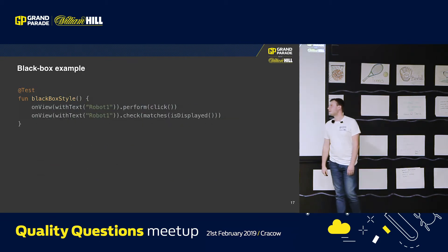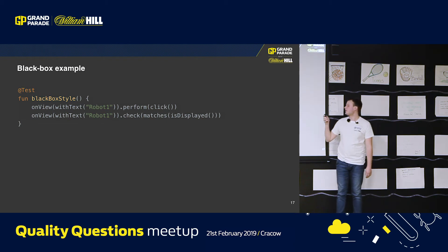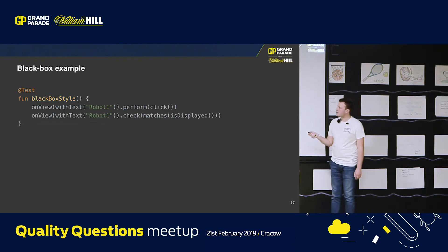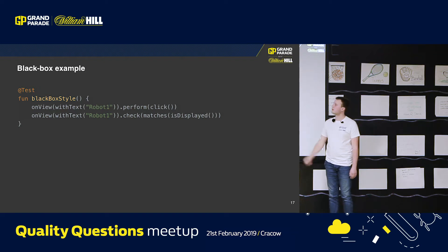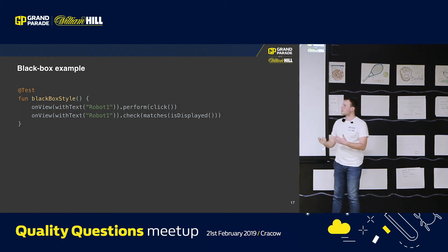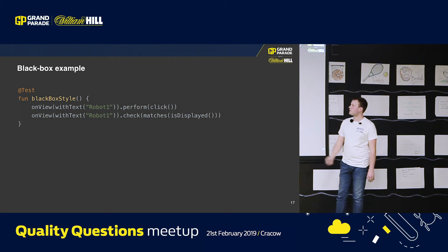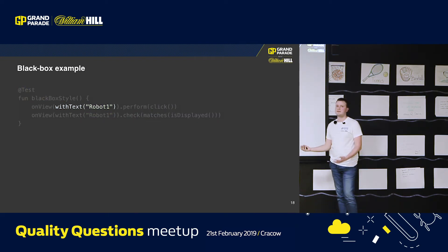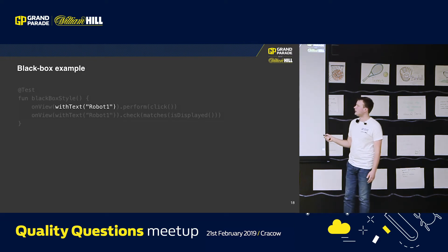Starting to write your tests as black box tests, you may use a matcher with text and provide some string. It's quite easy and quite obvious on the screen what you are searching for, but it's not very explicit and targeted, because it will find the first occurrence of this text on the screen and it may not be the button you want to click.